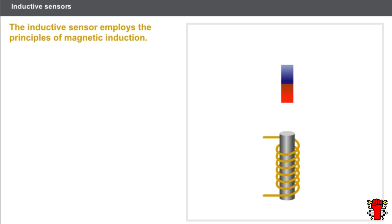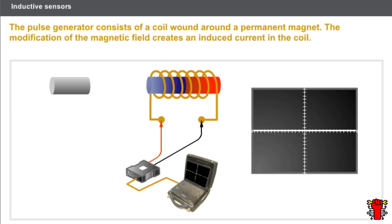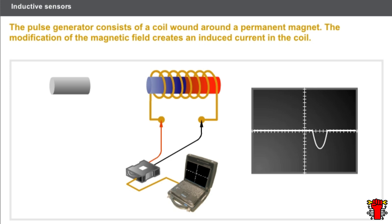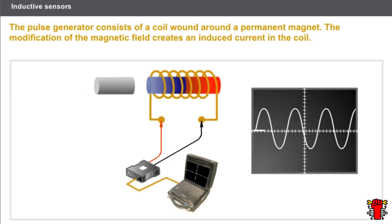The inductive sensor employs the principles of magnetic induction. Variation of the magnetic field in a coil creates an induced current. The position of the core relative to the coil modifies the induced current. There are two types of inductive sensors: the pulse generator and the variable inductance sensor. The pulse generator consists of a coil wound around a permanent magnet. When a metallic part is moved close to it, the magnetic field is modified, creating an induced current in the coil. When the metallic part is moved away, a reverse induced current is created in the coil.